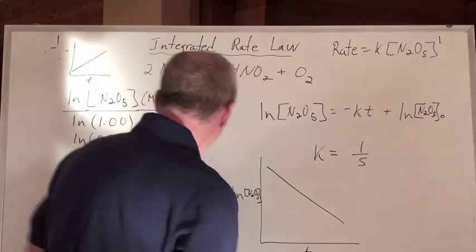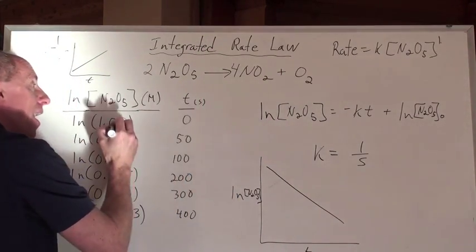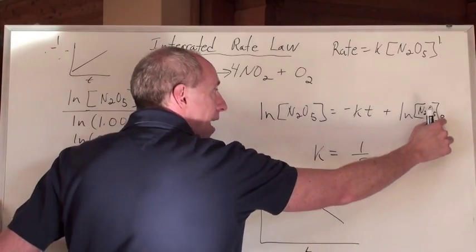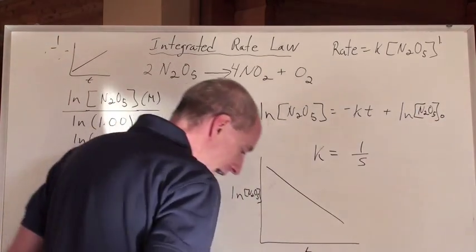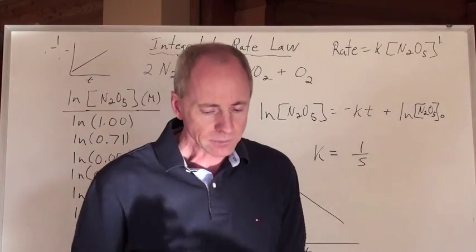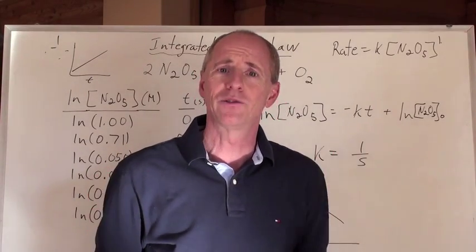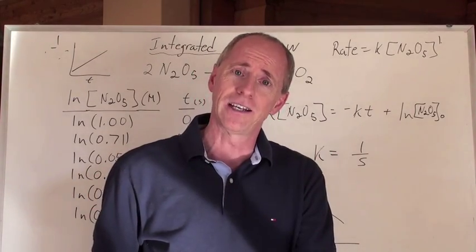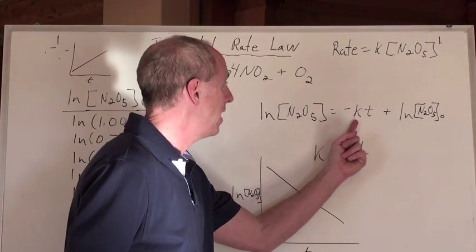Now, what if you weren't given an initial time to be able to have an initial concentration to input into here? How do you actually solve for K? Well, you know what? The easiest way to do it, if you have your scientific calculator, is remember that the K here, Y equals MX plus B.